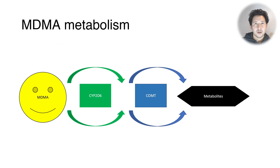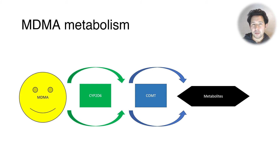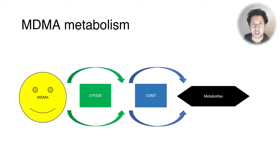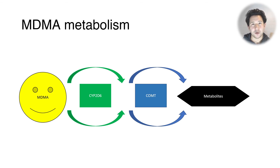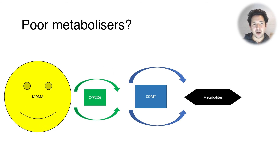MDMA metabolism has a couple of pathways. To simplify, there are two main enzymes involved: CYP2D6, which is a cytochrome P450 enzyme in the liver, and COMT. Basically both act sequentially and produce metabolites of MDMA.